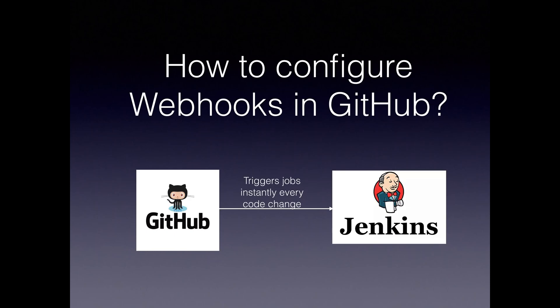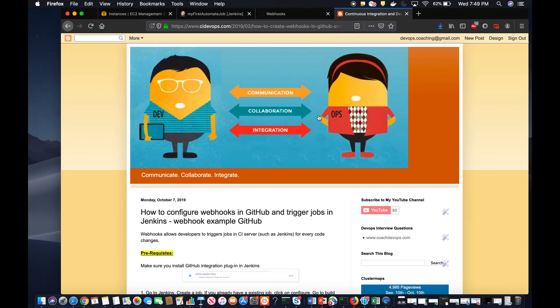Welcome back folks. What we are going to learn today is how to configure webhooks in GitHub. So what are webhooks? Whenever there is an action in GitHub, you want to trigger a build job in Jenkins instantly. When some event happens in GitHub, it triggers a build job in Jenkins right away — you don't want to wait one minute, 30 minutes, or even two seconds. You instantly want to kickstart your build job configured in Jenkins. That's all webhooks are.